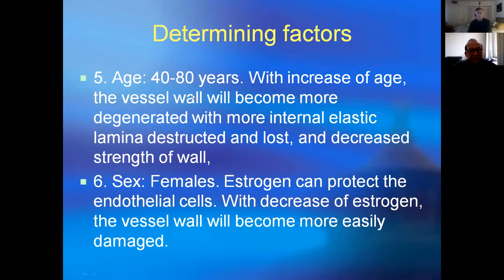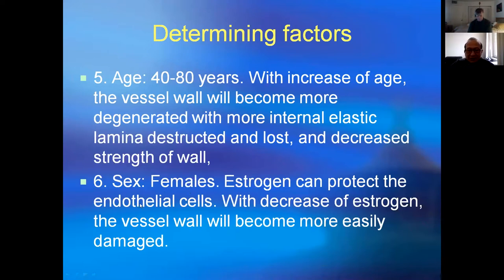Regarding age: aneurysms usually occur between 40 and 80 years. With increasing age, the vessel wall becomes more degenerated — the internal elastic lamina is more distracted and lost, decreasing wall strength. Regarding sex: females have estrogen that protects endothelial cells; with decreased estrogen, the vessel wall becomes more easily damaged.